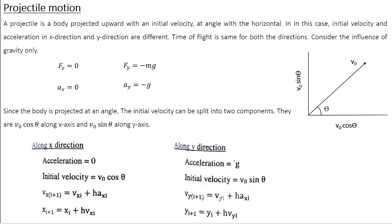Since the projectile is launched at an angle theta with respect to the x-axis, the initial velocity V0 is going to have two components: V0 cos theta along the horizontal direction and V0 sin theta along the vertical direction. Along x, you have acceleration Ax equal to 0 and the initial velocity is V0 cos theta. The Euler's formula gives Vx(i+1) equal to Vx(i) plus h into Ax(i), where h is the step size.